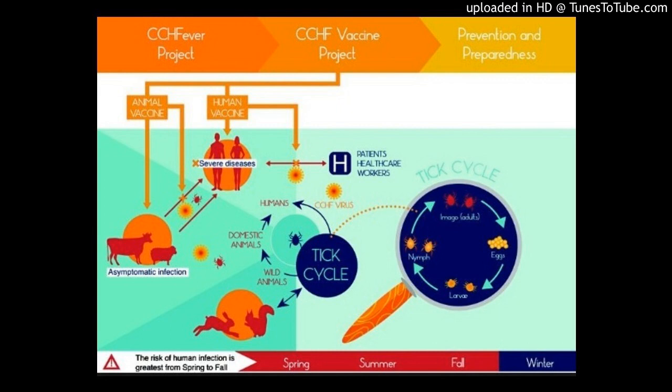Background and Objectives: Crimean-Congo Hemorrhagic Fever Virus (CCHFV) causes severe disease with a fatality rate of 30%. The virus is transmitted to humans through the bite of an infected tick, direct contact with the products of infected livestock, as well as nosocomial transmission. The disease occurs sporadically throughout many African, Asian, and European countries.